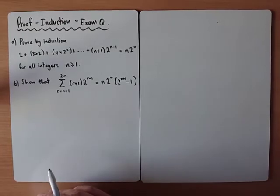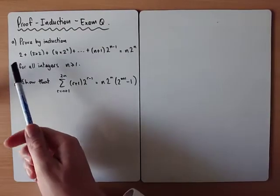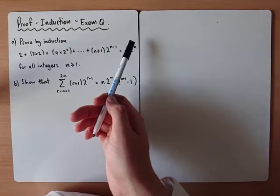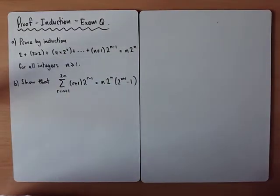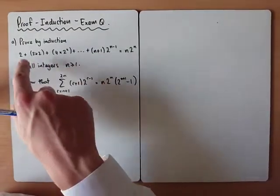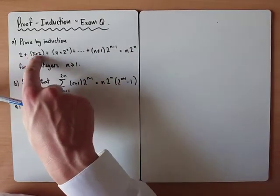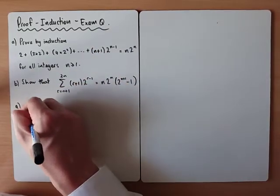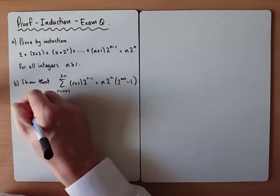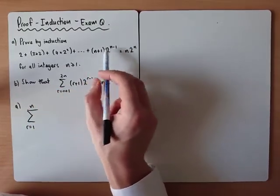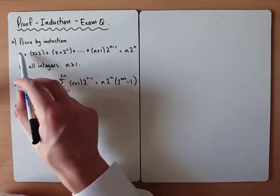Let's take a look at a past paper question using proof by induction with series. Part A says prove by induction the sum of these terms, and the result we're trying to get to is n times 2 to the n. The key thing before you even start on this question is to understand what this series represents. The individual terms look like this, and we're doing the sum from 1 to n.